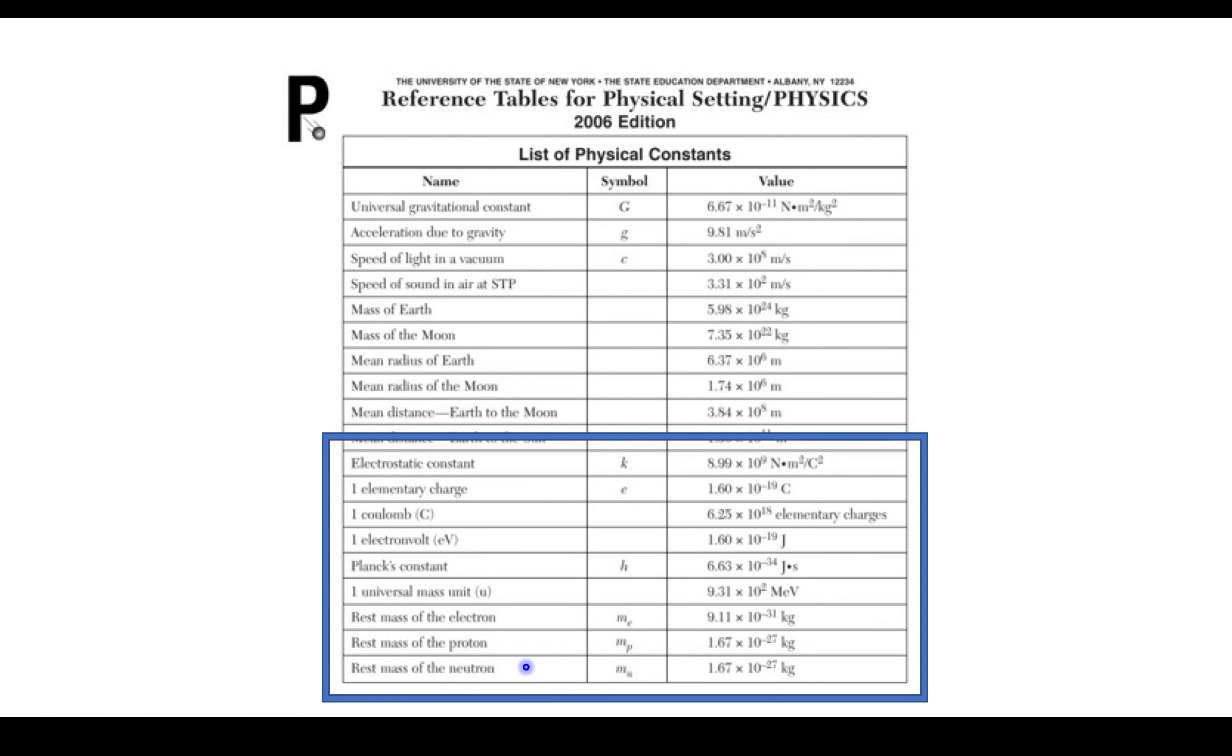First things here: electrons, protons, and neutrons. Their rest mass is down here. This will be more important in modern physics when we get to the end of the year, but we will need to know electrons and their mass for a couple units coming here. Universal mass unit, Planck's constant, electron volt. That deals a little bit with electricity and we'll start to talk about that towards the tail end of this unit, but the constant elementary charge and a Coulomb are really the most important. Basically, an elementary charge is the smallest possible unit of charge we could have.